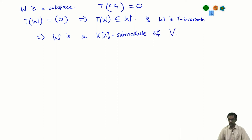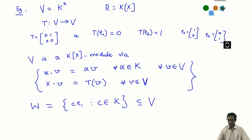So we have found a submodule. Just to recall what T does: T(E₁) = 0 and T(E₂) = E₁.